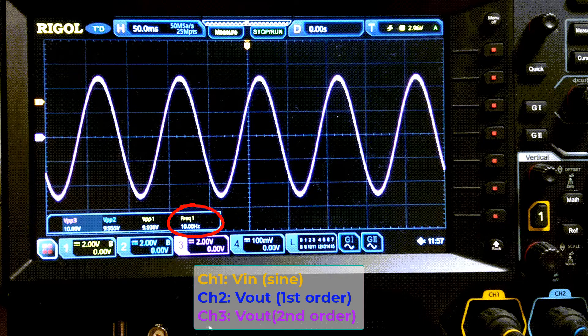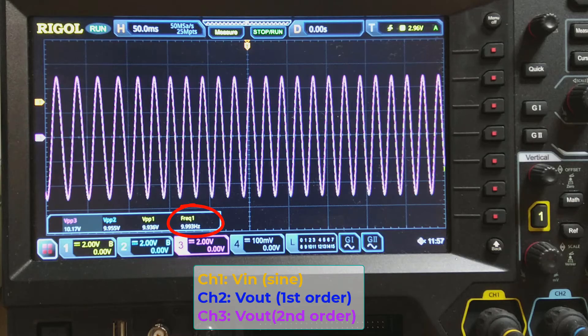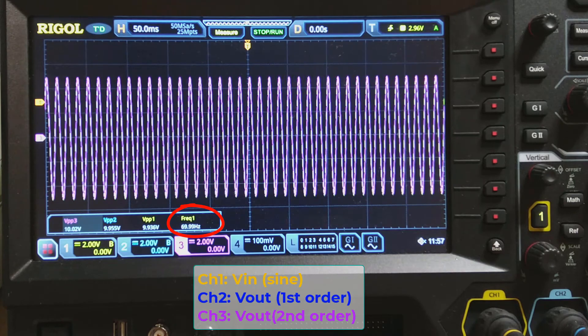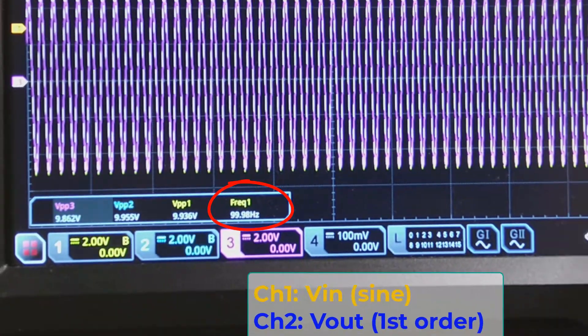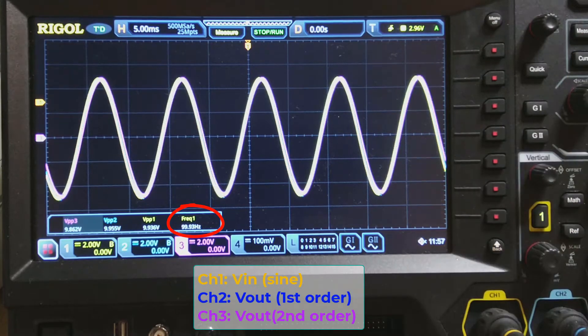As you can see on the screen, when the frequency is 10Hz, three channels are overlapping each other and have similar magnitude and zero phase shift. Now, I will begin to increase the input frequency. You can rely on the reading of measurement as frequency 1 on the screen. Right now, the frequency is 100Hz.